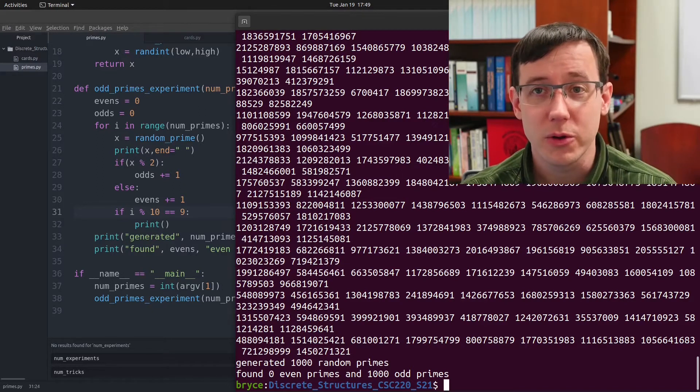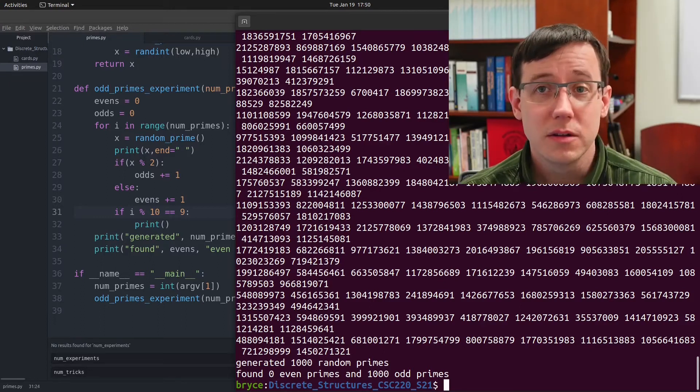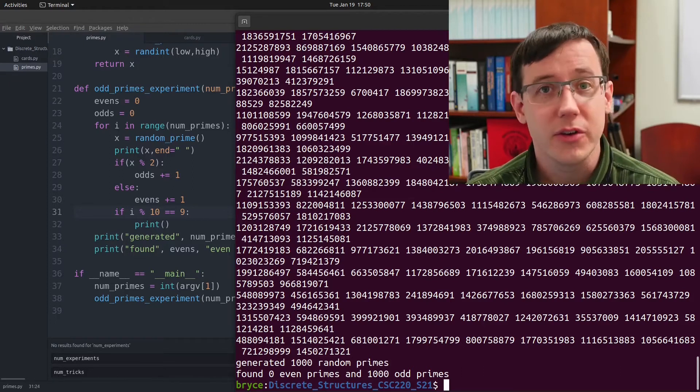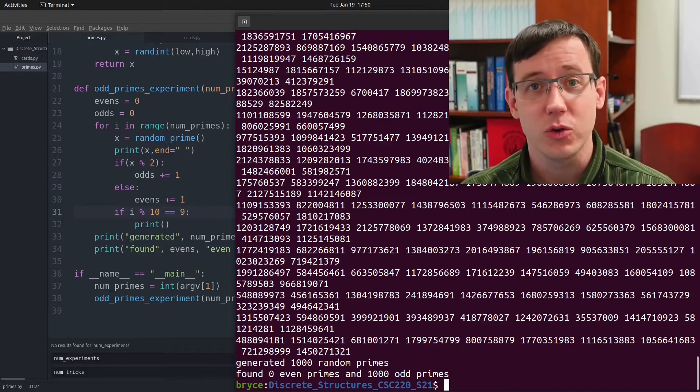No. There is an obvious counter-example, which is that 2 is an even number that is prime. So, in the case of generating random prime numbers, there is only one counter-example, and if I'm generating random prime numbers, that counter-example is very unlikely to occur.